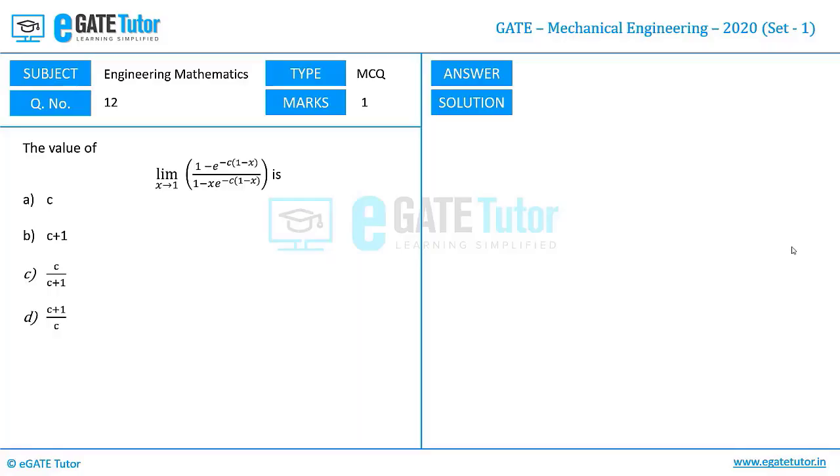The value of limit x tends to 1, (1 minus e^(-c(1-x))) / (1 minus x*e^(-c(1-x))) is: c, c+1, c/(c+1), and (c+1)/c.